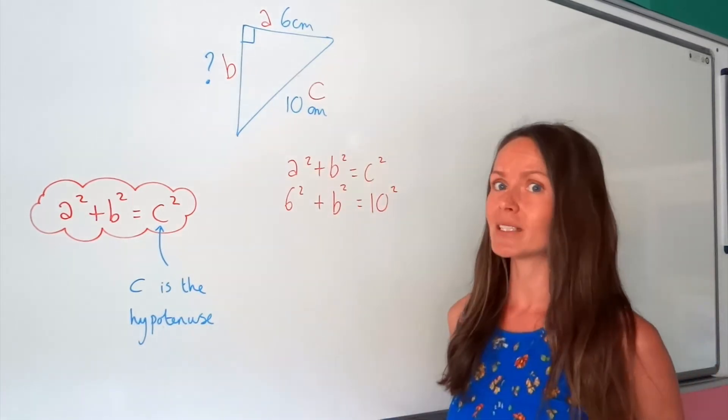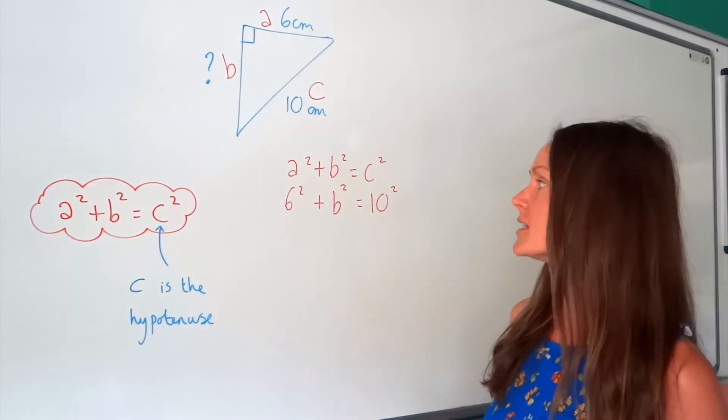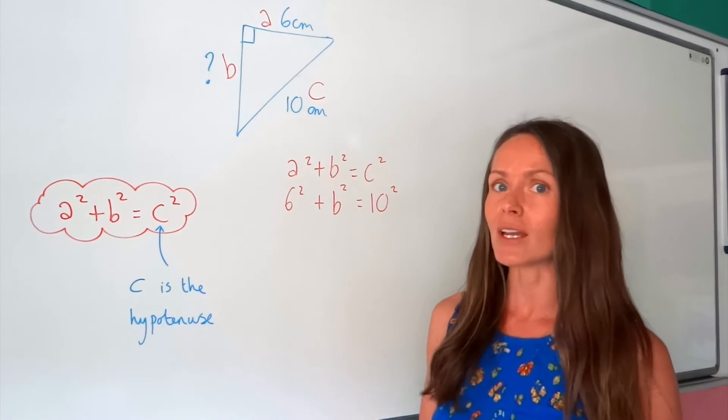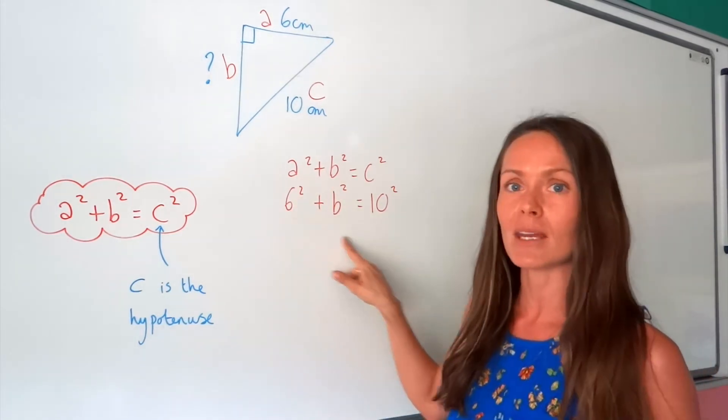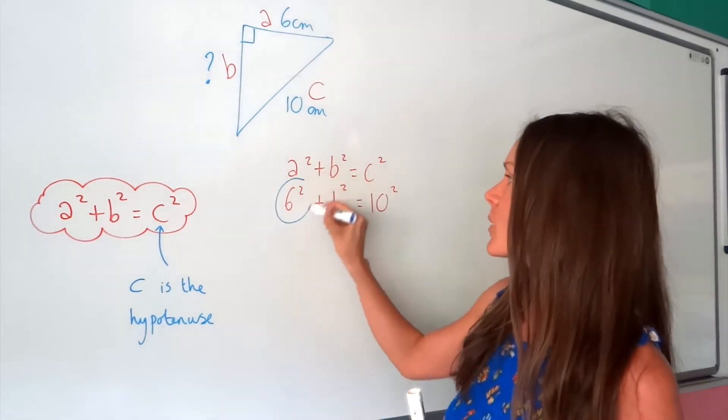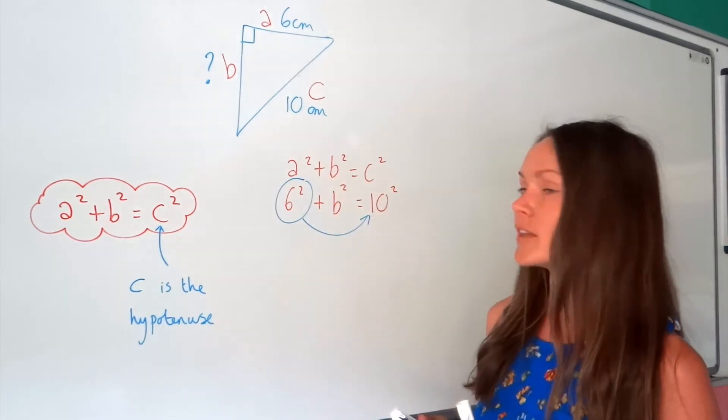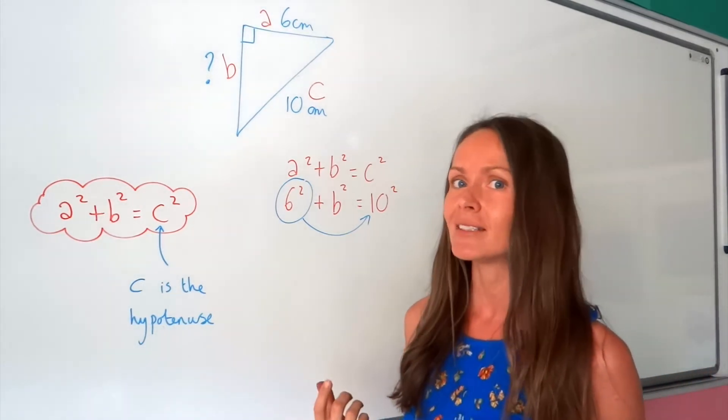Well, this one's a little bit different. There's an extra step in this question when we're finding one of the shorter sides. Remember, when you're solving to find an unknown, you need to move everything else away from it until B is by itself. So I'm going to move that 6 squared to the other side of the equal sign. And remember, when something moves across the equal sign, it changes sign.